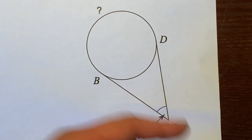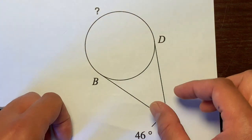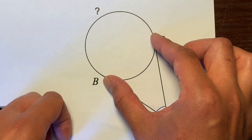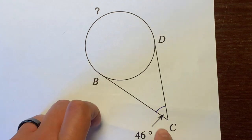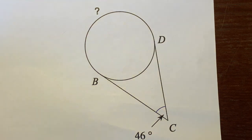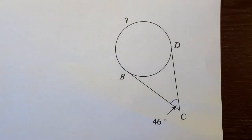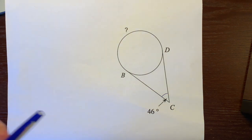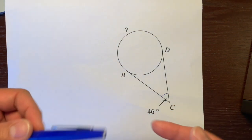It gives us some information. We have these two tangent lines that touch the circle at one point here and one point here. We know that their angle intersects on the outside of the circle, which is 46 degrees.